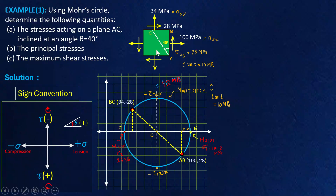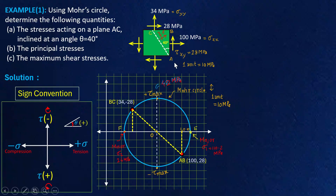Now we would like to find the stresses on plane AC — it will have a normal stress sigma and a shear stress tau. To find sigma and tau, we first locate plane AC on the Mohr circle. Plane AC is inclined at 40 degrees in the anti-clockwise direction with plane AB. In the Mohr circle, the angle is doubled, so 40 degrees becomes 80 degrees. We measure 80 degrees in the anti-clockwise sense from point AB on the circle, and this point represents plane AC.